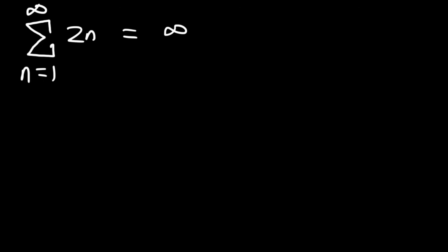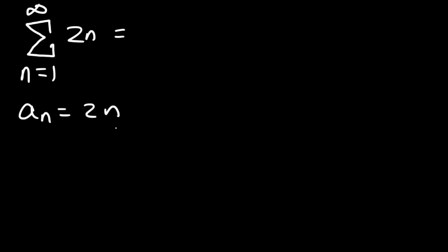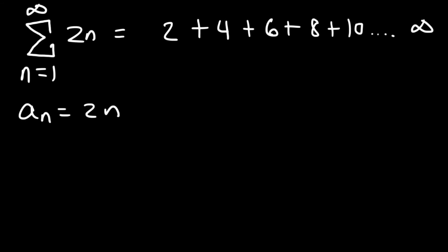Let's determine if the infinite series of 2n converges or diverges. If it equals a specific number it converges; if it equals infinity it diverges. The terms are 2, 4, 6, 8, 10 — we're adding these terms via summation notation. This will keep increasing all the way to infinity, so intuitively the infinite sum is infinity, which tells us the series diverges.